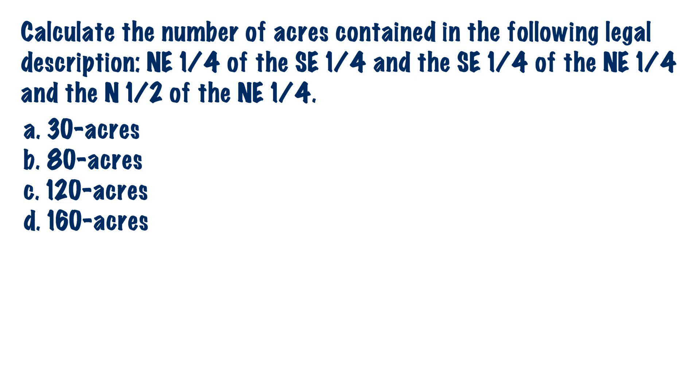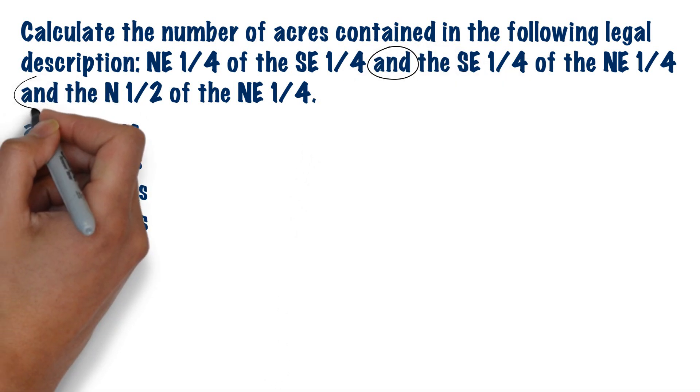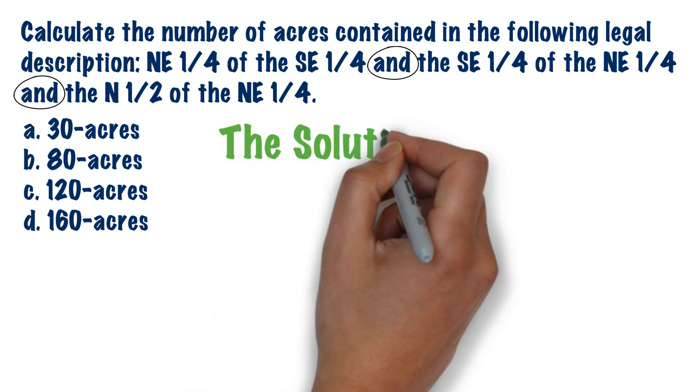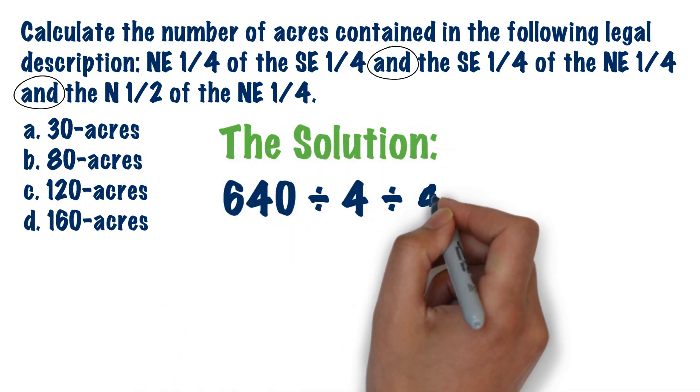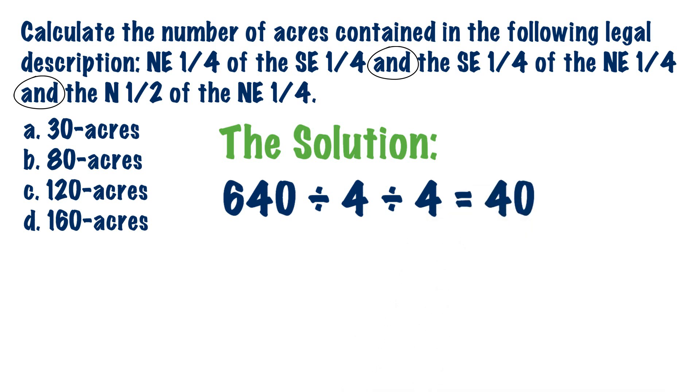When we look at this question, we notice there are two ands in our question, so therefore we actually have to do three separate calculations. First, we take 640, divide by 4, divide by 4, to get 40.